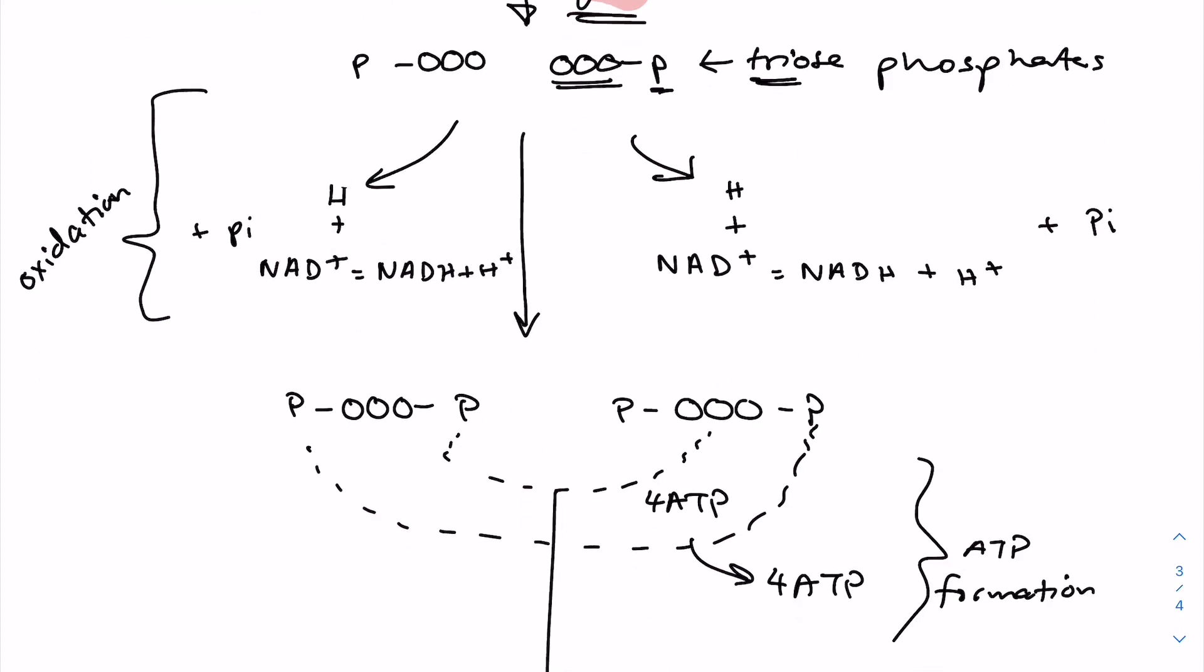So the third step is oxidation, and hydrogen atoms are removed from each of these triose phosphates by oxidation to reduce NAD+ to NADH + H+. And NAD+ is basically a hydrogen carrier which is used in later parts of aerobic respiration, which will probably be explained in another video. So basically, two molecules of NADH are produced in total, one from each of the triose phosphates.